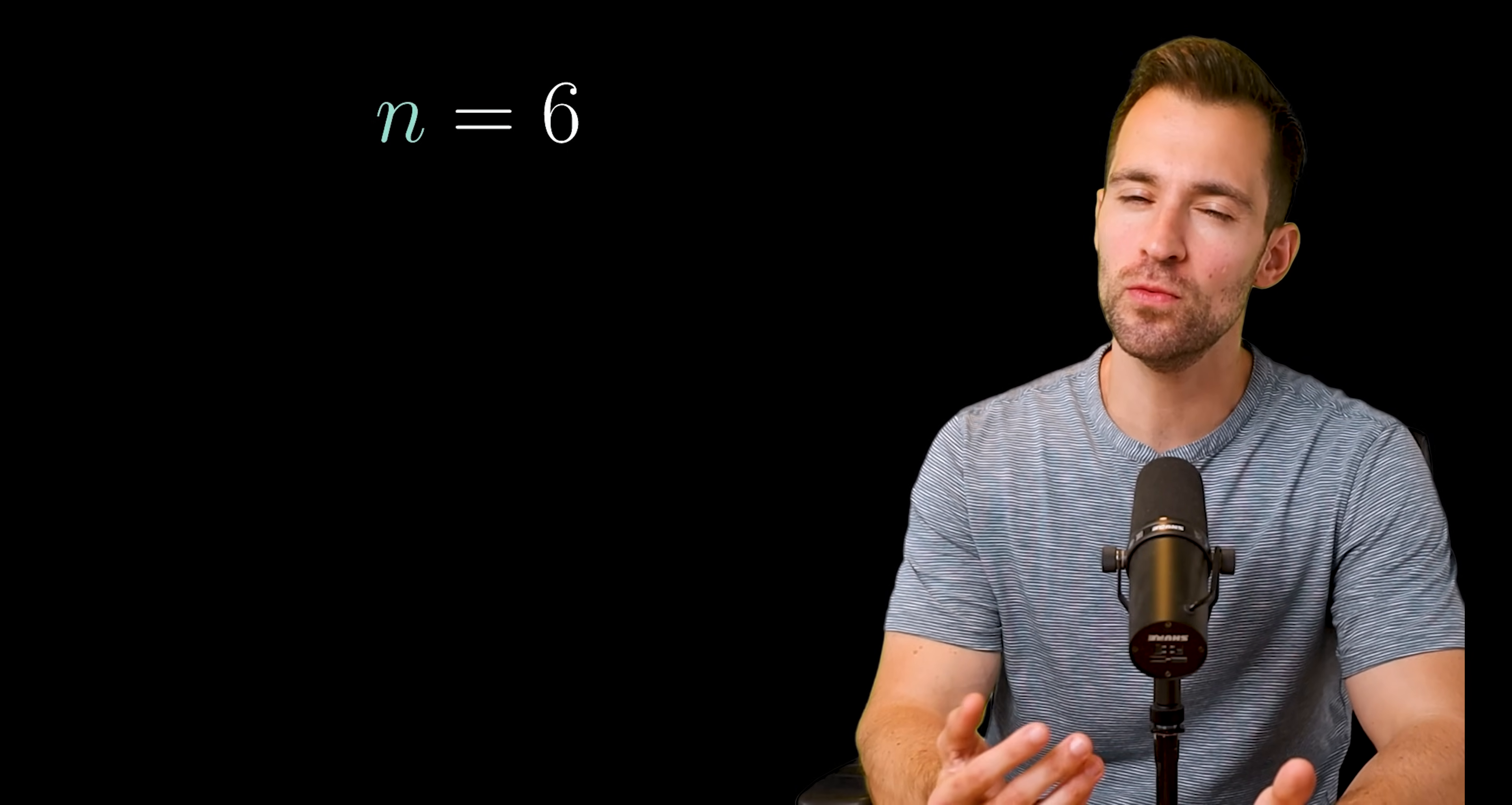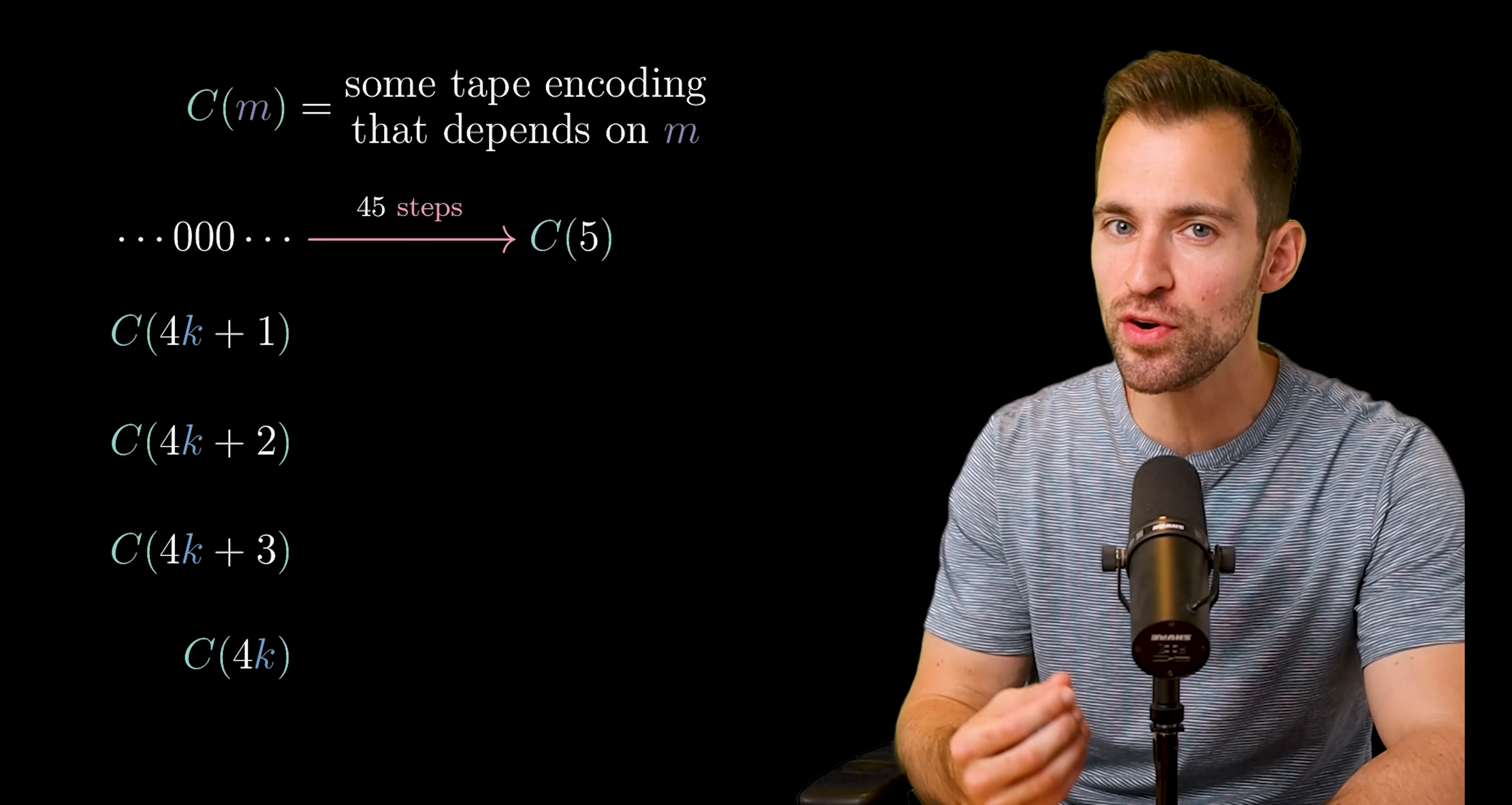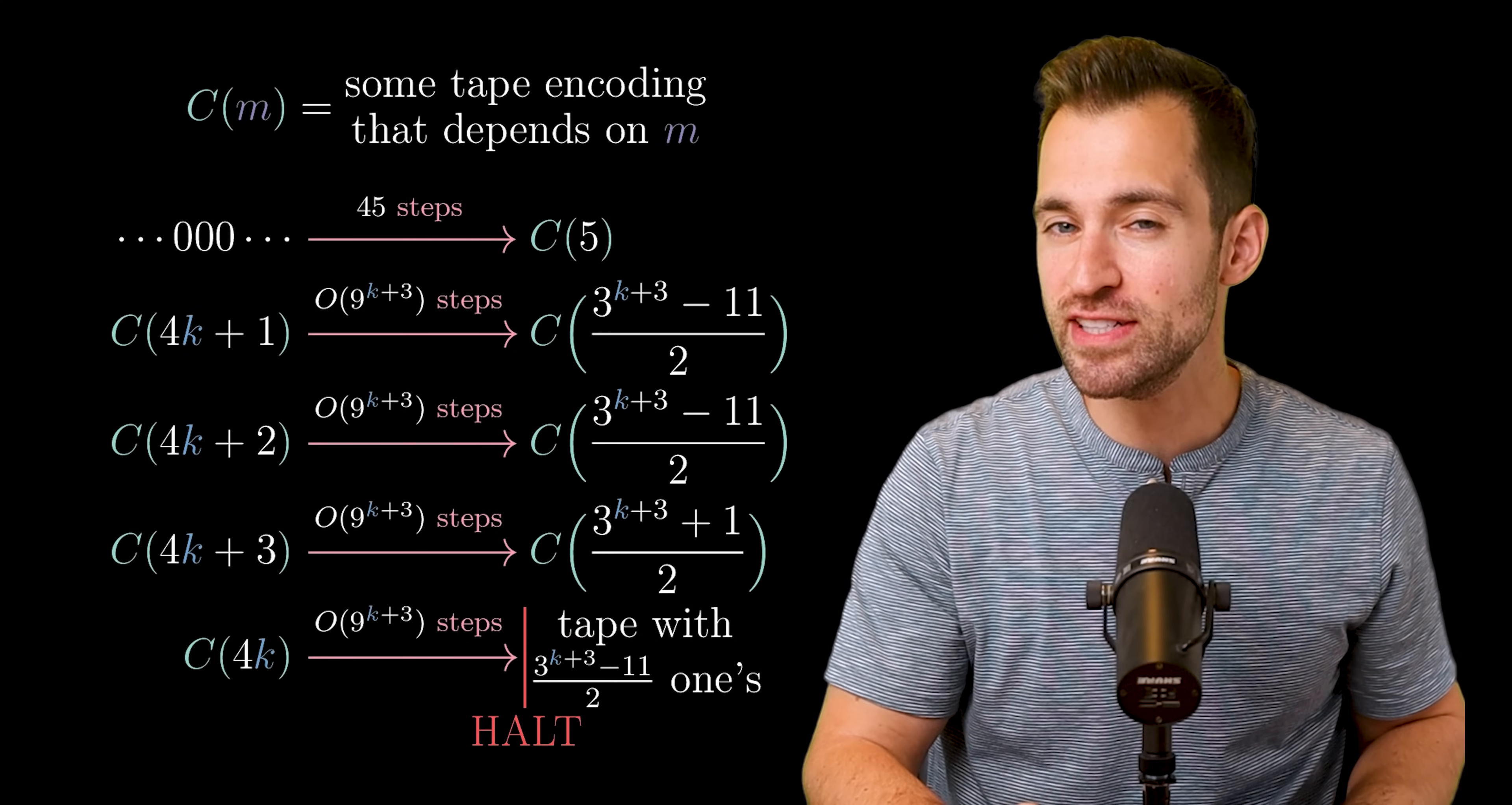Now the question is, what happens at n is equal to 6? Well, at this level, it's unlikely we know the busy beaver. So we can only talk about our best machine so far. This is our champion machine, and it applies an exponential version of a Collatz-like function. To see this, let C(m) refer to some tape encoding that depends on m. All you need to know is that the machine can read the integer m from whatever this encoding is. When we start with the all zeros tape, we take 45 steps to produce C5. Then the behavior depends on the remainder when 4 is divided out. If the tape doesn't encode a multiple of 4, then those get mapped to these tapes. The important thing to note is the multiplier k gets exponentiated.